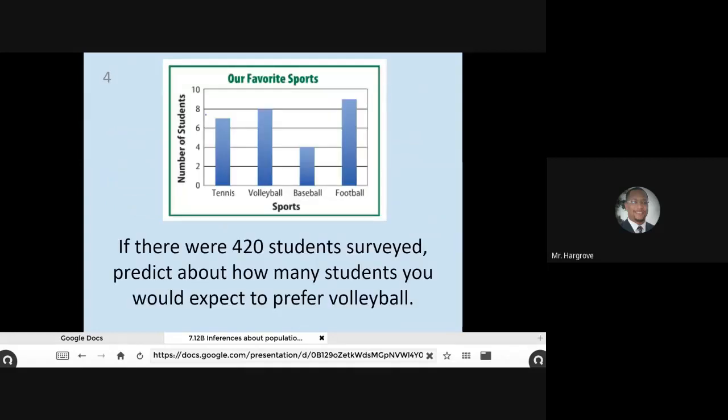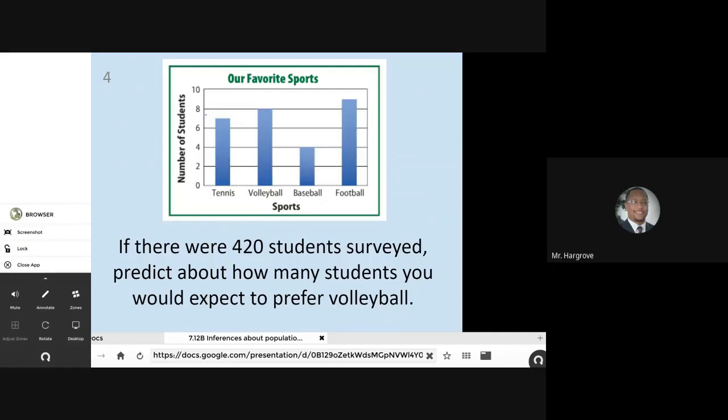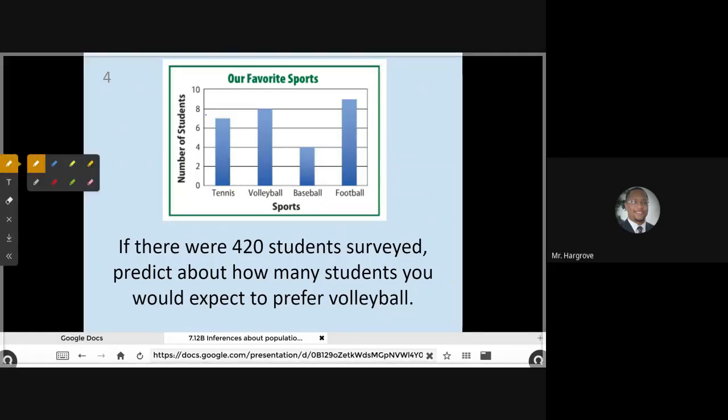Let's start with this first example. If there were 420 students surveyed, predict how many students you would expect to prefer volleyball. So if I look at this bar graph, I'm seeing that students were surveyed on their favorite sport. And we have the results of the survey listed here. We can see that 7 students said they prefer tennis, 8 students said they prefer volleyball, 4 students said they prefer baseball and 9 students said they prefer football.